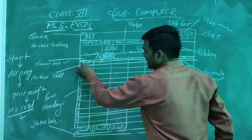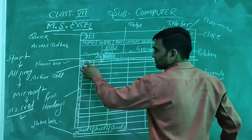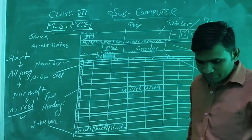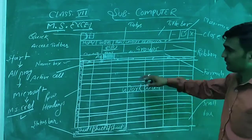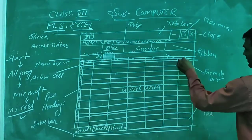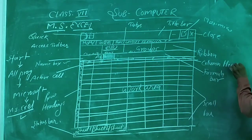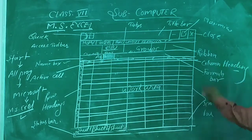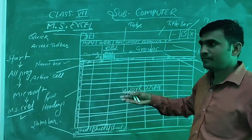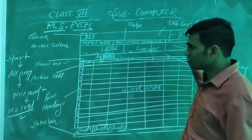Below the formula box there is a header section and it indicates A, B, C, D, E, F, G, H and so on — these are the column headings.